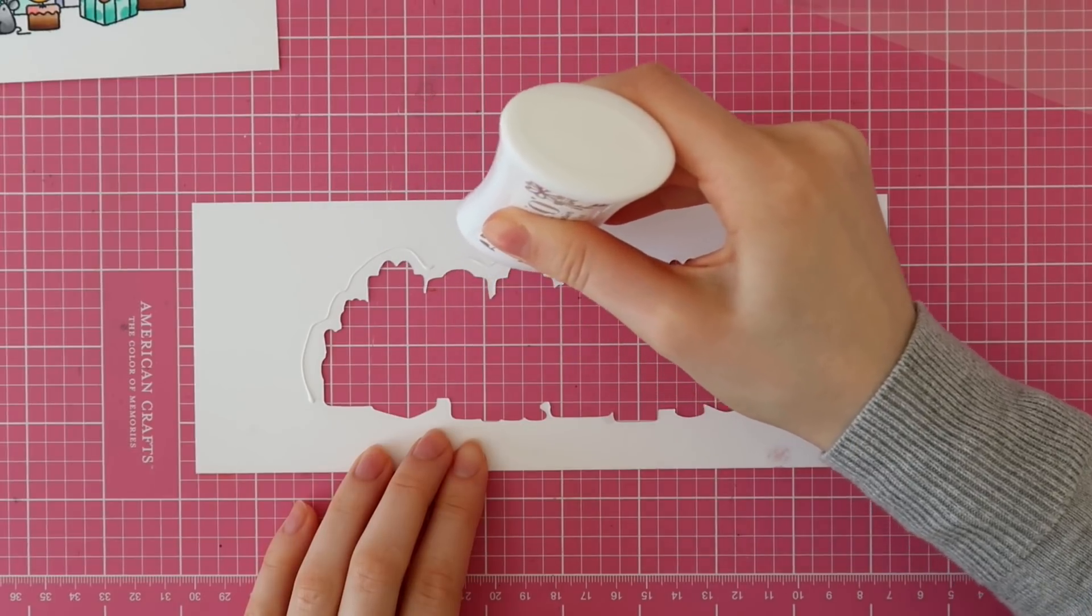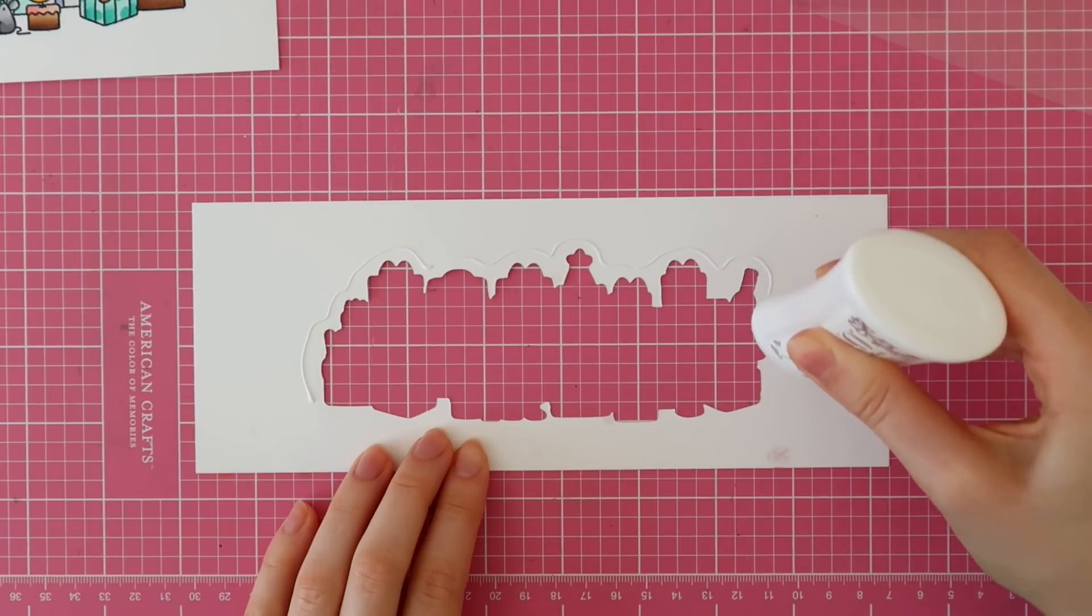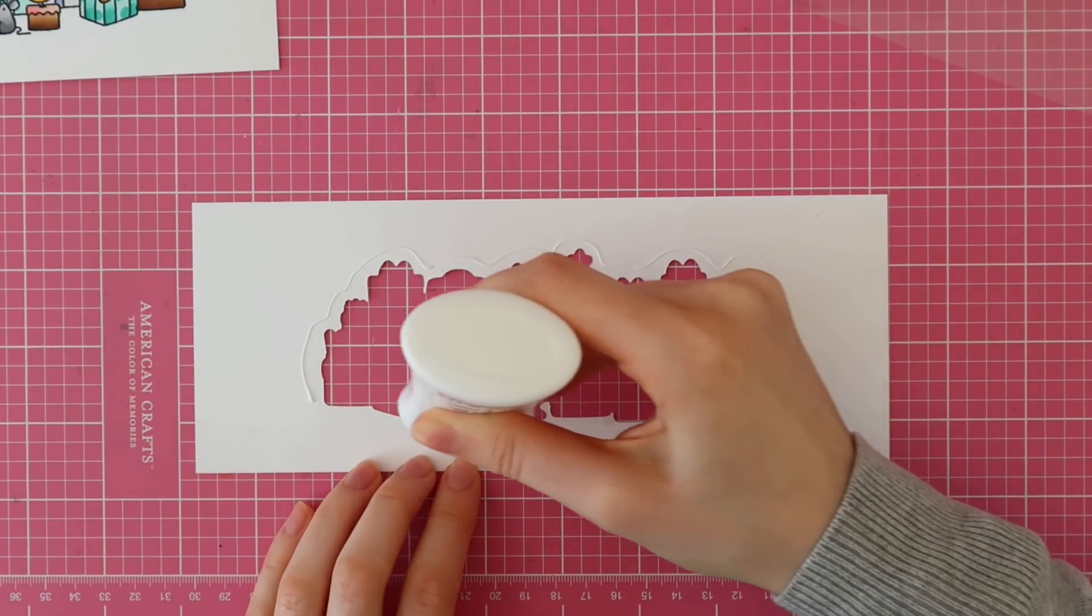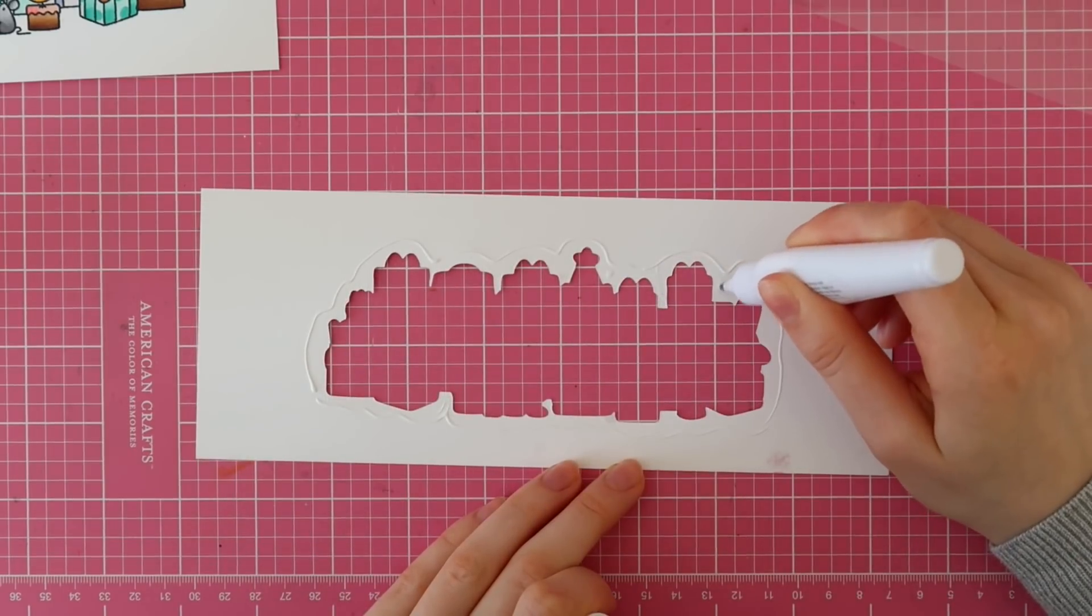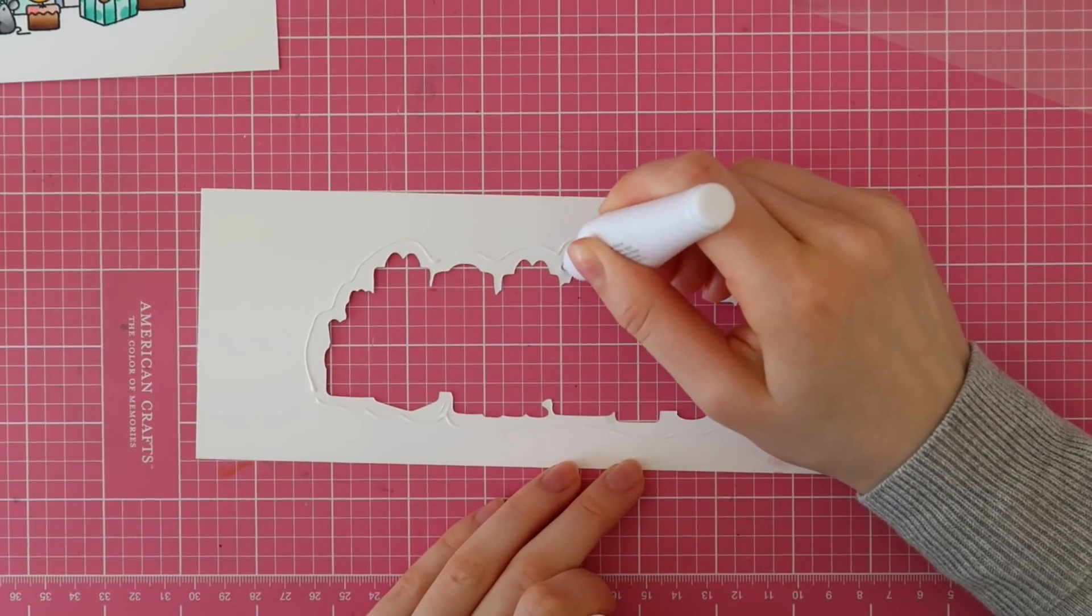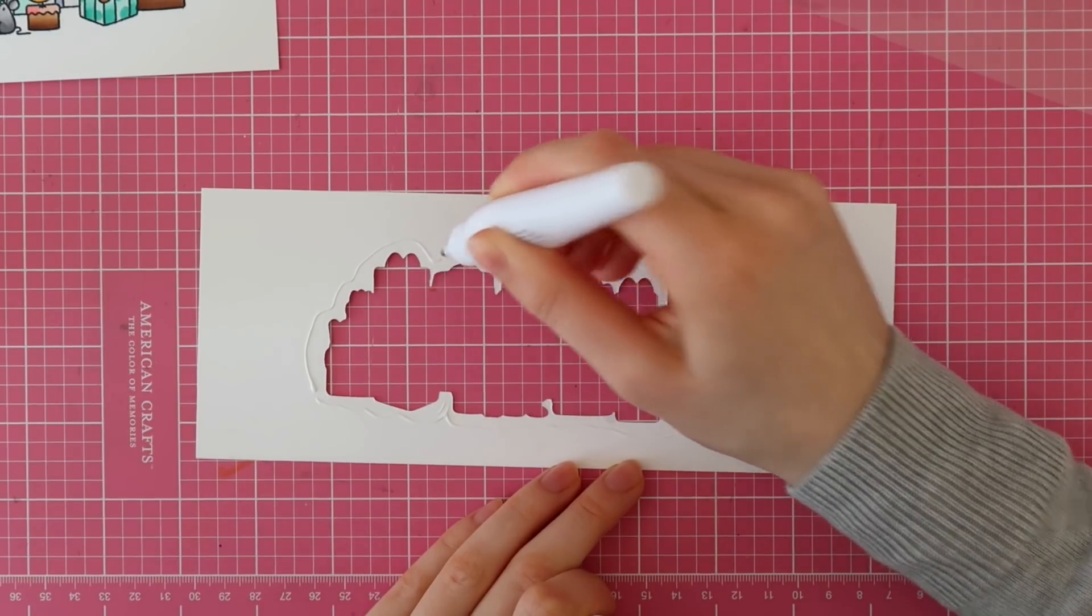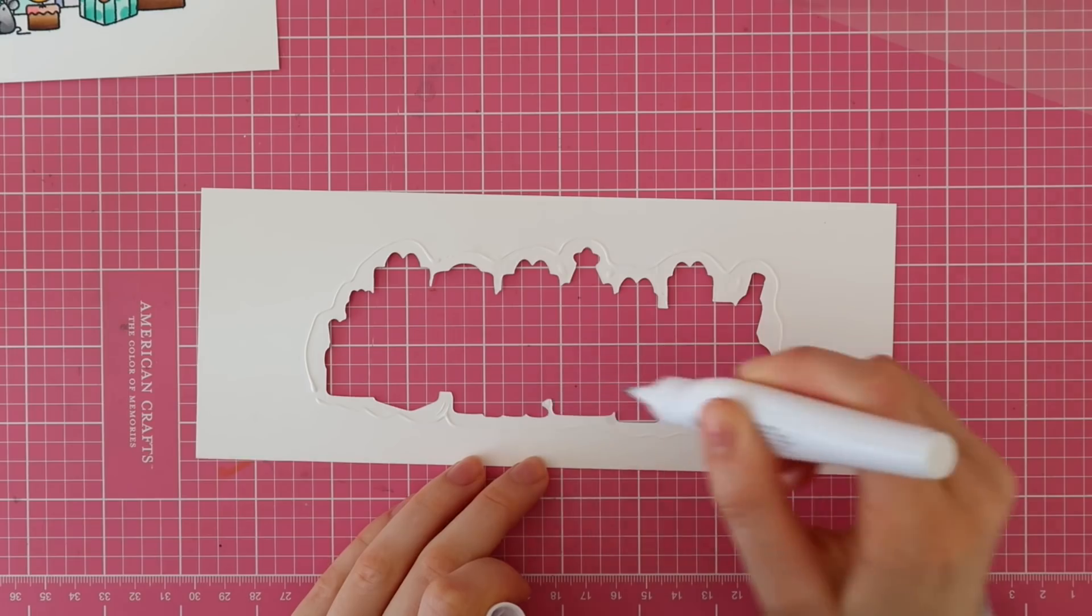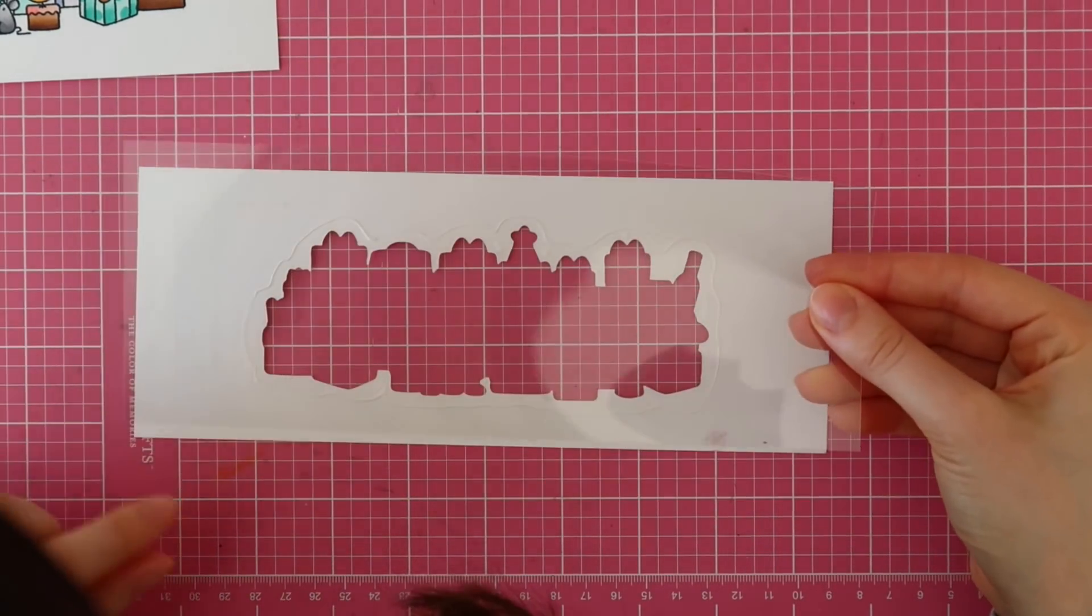Okay, so I just took a piece of acetate and I also cut that to three and a half by nine inch and then I am applying some liquid glue to the back of my shaker window. I am using the Tonic Studios Nouveau Deluxe Adhesive as well as the Tonic Studios Smooth Precision Glue Pen to add the adhesive.